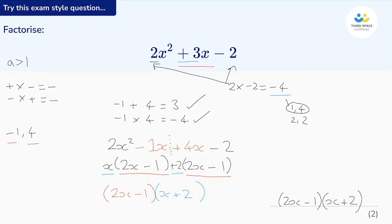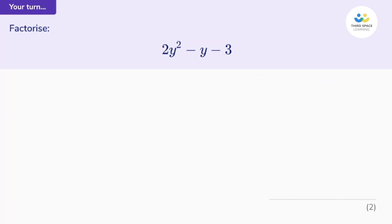Let's see where the marks come from. We get one mark for having a 2x and a 1 in one bracket with some sign in the middle, and an x and a 2 in the other bracket with some sign in the middle — so even if we get the signs wrong we can still get a mark. But we want full marks, so the second mark comes from the fully correct answer: 2x take away 1, bracket x plus 2. Okay, your turn — pause the video and have a go at this one. Take it step by step, best of luck, we'll go through it in a sec.